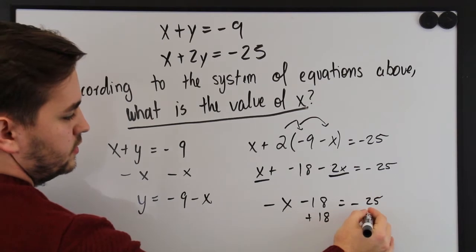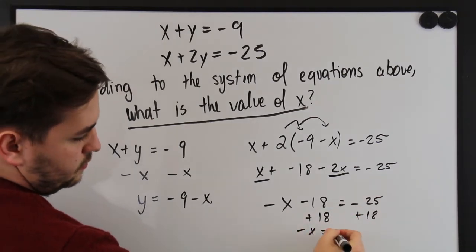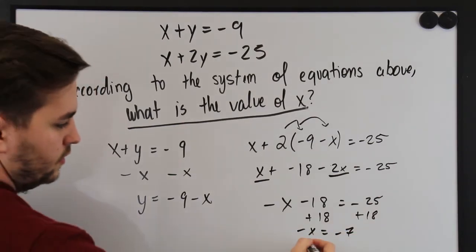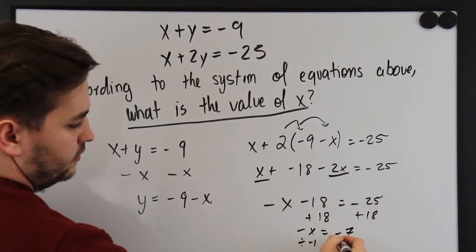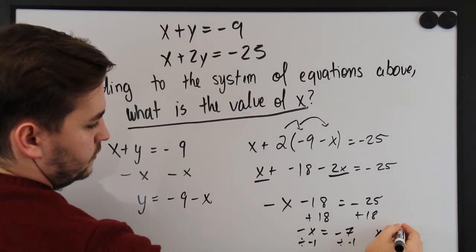Add 18 to both sides, and then simply divide by negative two to get my answer.